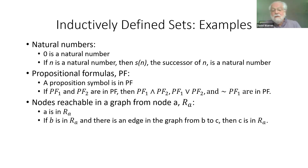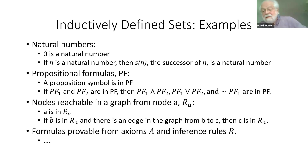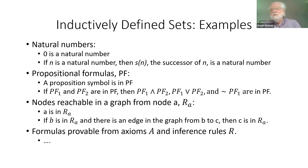Another example: nodes reachable in a graph from node A. A is in the set of nodes reachable. And if B is in the set of nodes reachable and there's an edge from B to C, then C is in the set of known reachable nodes. Similarly, formulas provable from axioms and inference rules: the axioms are in the set of provable, and if the rules say some provable formulas imply another, that formula is provable. These are all examples of inductively defined sets.